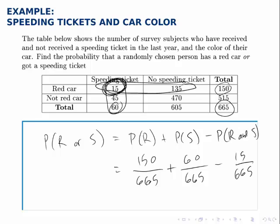We could also do this problem by adding up those with a red car and then only adding on the extra ones that we need, the people who got a speeding ticket but didn't have a red car. Or we could add up this column of speeding tickets and then simply add on the extra people who had a red car without a speeding ticket.